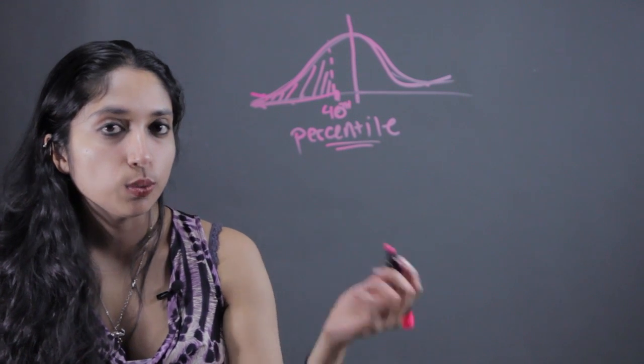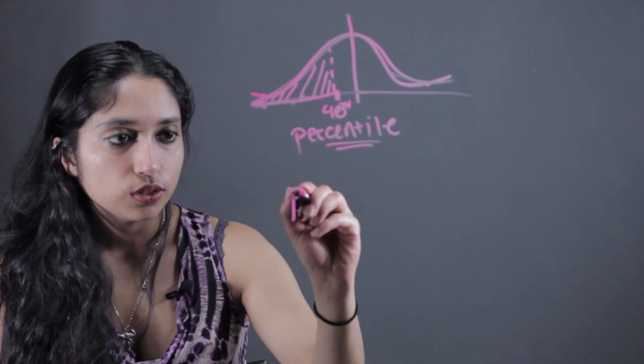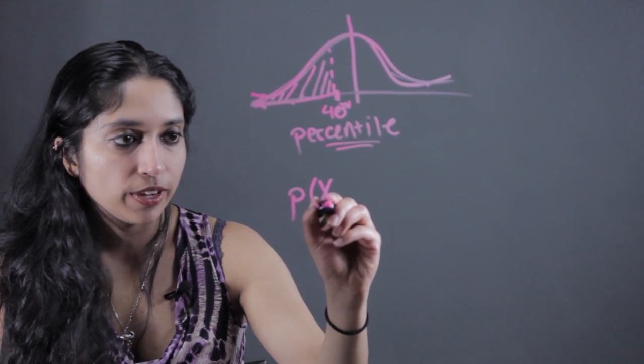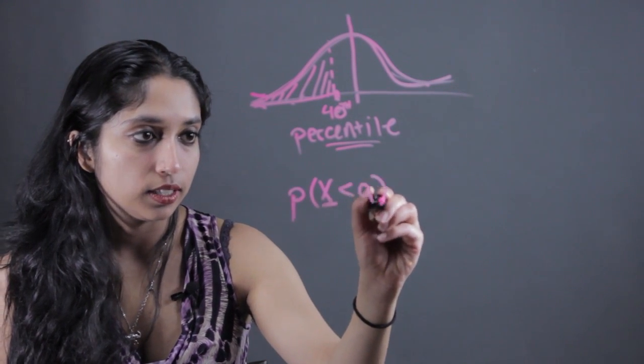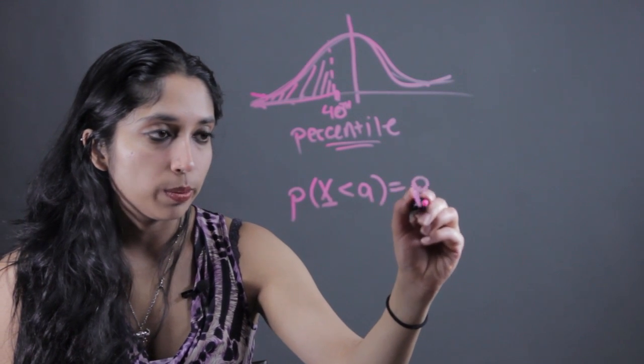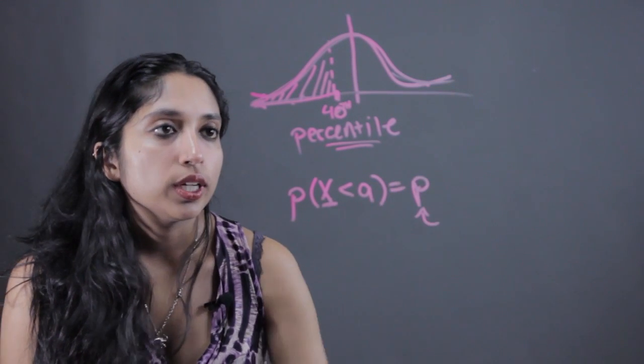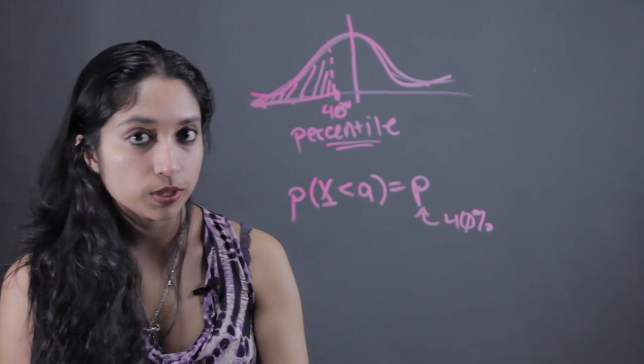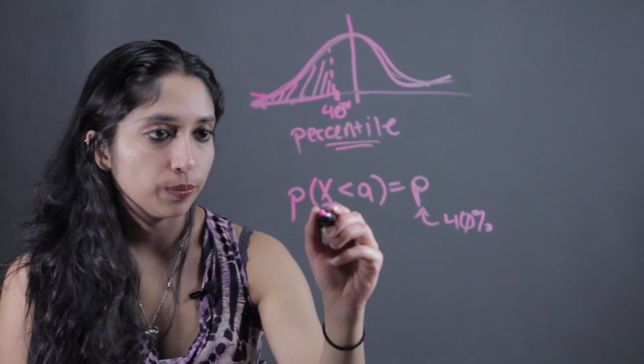So a good way to think about that is probability that X, some value, in this case test score, is less than A, is equal to a probability that's given. So like in this case, we were talking about 40% of the people did worse than you.